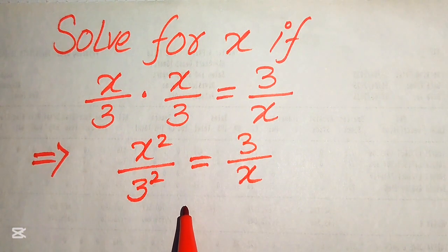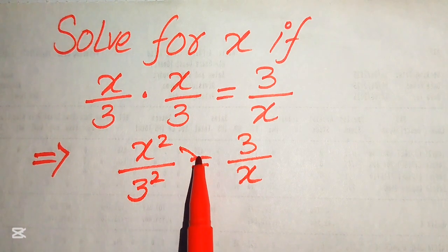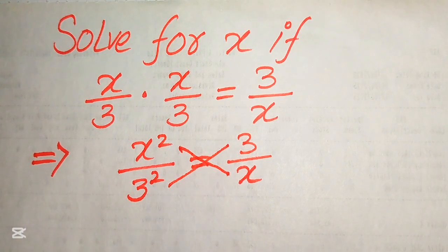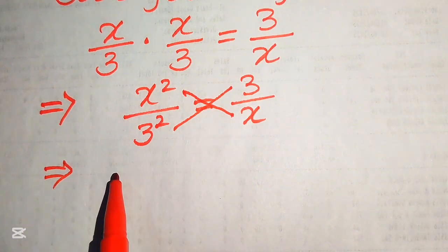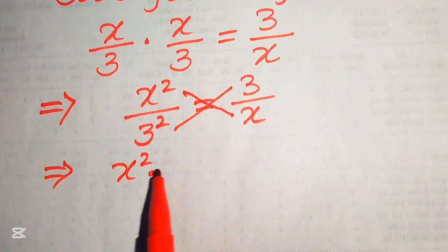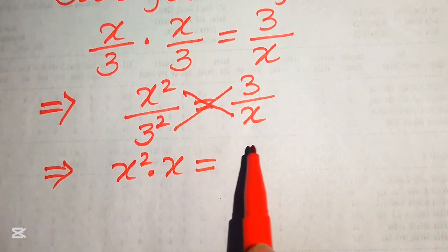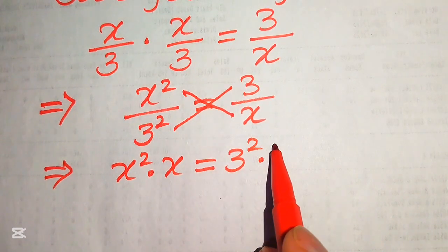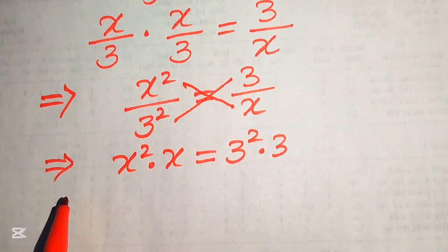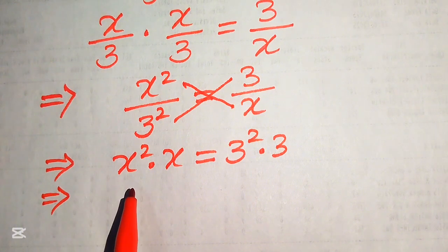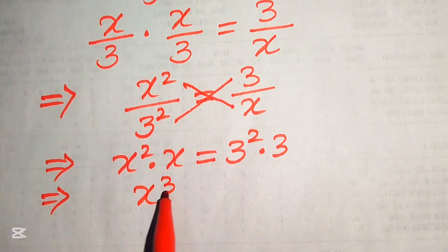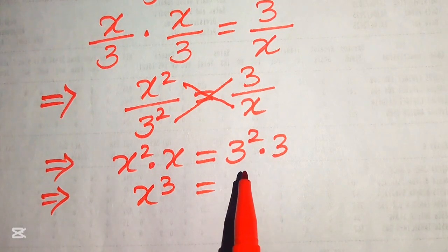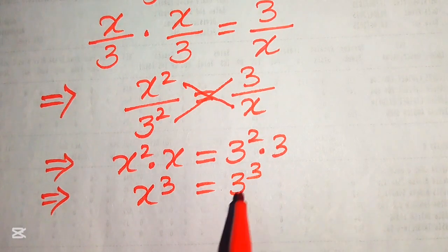In the next step we cross multiply the terms — we multiply these two terms and these two terms as well. Moving x to the left-hand side gives us x squared multiplied by x equals 3 squared multiplied by 3, so x³ equals 3³.